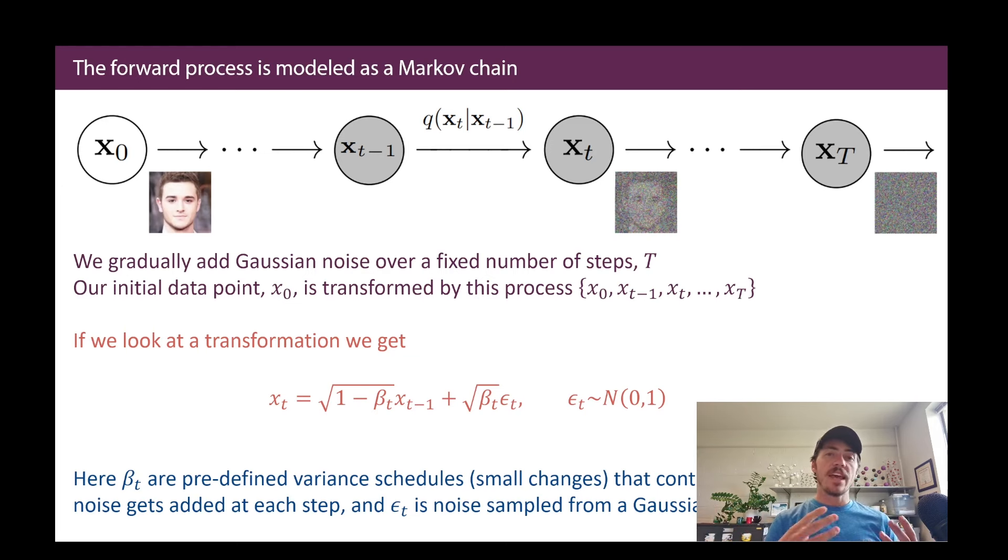So, let's see the math for this. The way that we do the forward process, it gets modeled as a Markov chain. So, we are going to gradually add data over some fixed number of steps, capital T. Therefore, our original data, which was x at some time zero, it's going to be transformed by this process to a series of data. We now have a series of versions of our data where it's going to exist at x0, xt minus 1, xt, some arbitrary value, all the way to capital T. We're going to have a large number of steps of the data being transformed. And each step of this transformation, we look at it mathematically as the value at some step in this process, T, is going to be equal to the square root of 1 minus beta T, where beta is our variance schedule, times what the previous image looked like. And then we're going to get, adding to that, our variance schedule square root times epsilon T, where epsilon T is just the noise which is drawn from a Gaussian distribution.